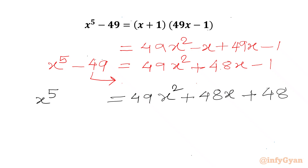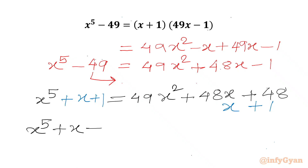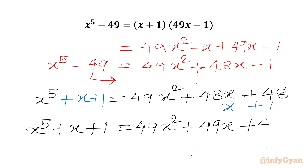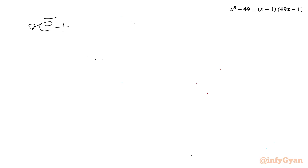Now I will add x plus 1 to both sides. So I will write x plus 1 on each side. So our equation becomes: on the LHS we write x to the power 5 plus x plus 1, and the RHS will be 49x squared plus 49x plus 49. Now we can take 49 common from the RHS, giving us 49 times (x squared plus x plus 1).